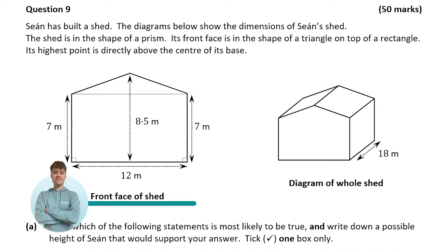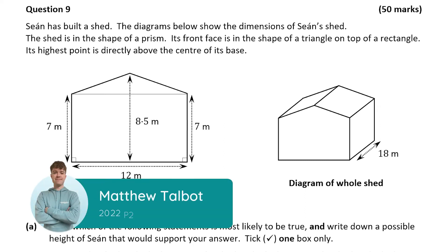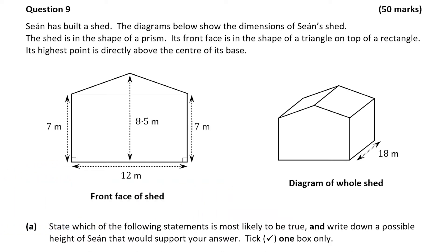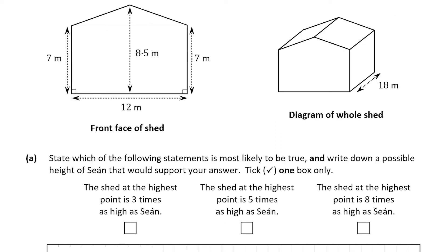Hello, it's Matthew here and we're looking at question 9 which is worth 50 marks. We're shown two dimensions of Sean's shed: the front face of the shed and a 3D diagram of the entire shed. Let's start with part A — we're asked which of the following statements is most likely to be true and to write down a possible height of Sean that would support this answer.